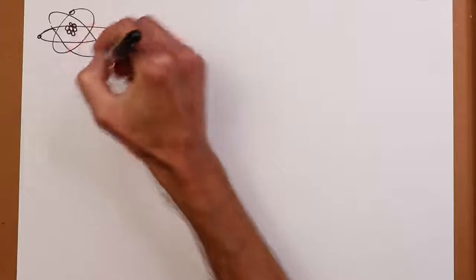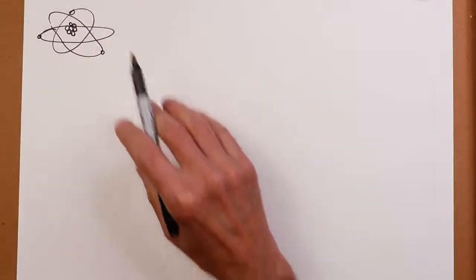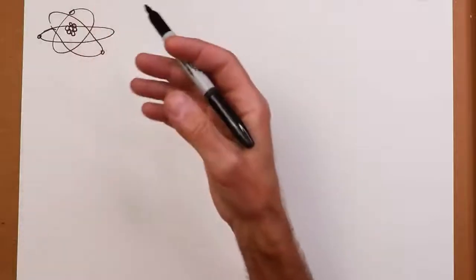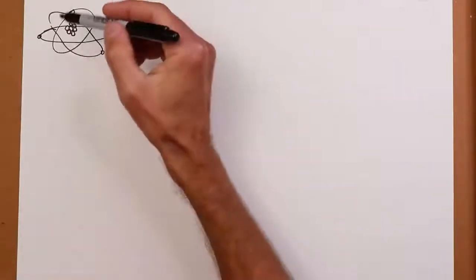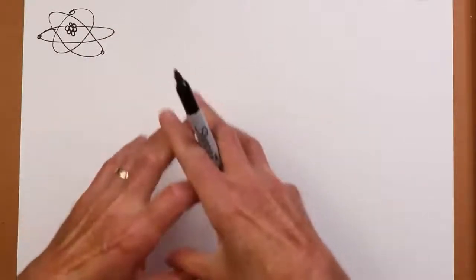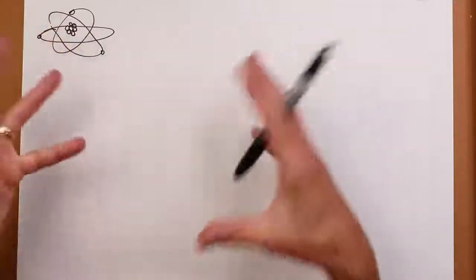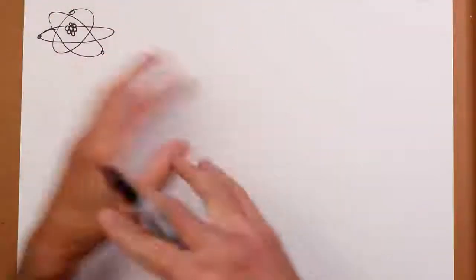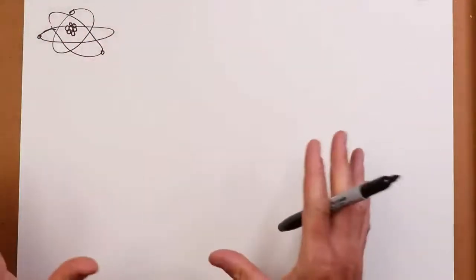Electrons do not move in these nice elliptical orbits in a planar fashion. In fact, if you could see them, you can't, they're too small obviously, but if you could, it would look probably more like a cloud of bees around a hive, more of this sort of cloudy kind of thing, this sort of fuzzy mass zipping around.